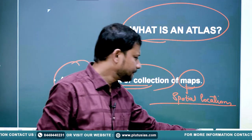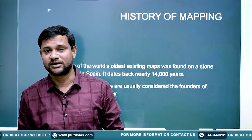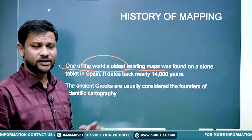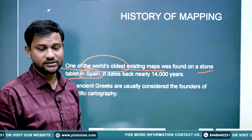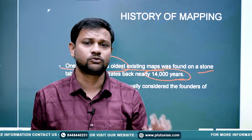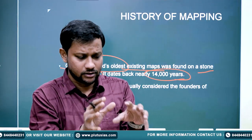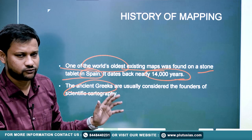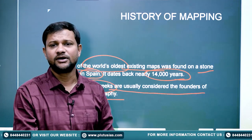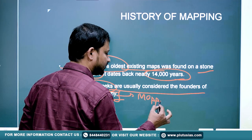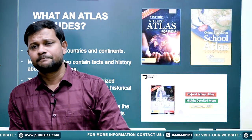Now, a brief about how mapping activity came into being. One of the earliest raw maps had been drawn on a stone tablet in Spain, nearly 14,000 years ago — a very raw map, just representing a local process. Later, the ancient Greeks and Indians as well promoted the formation of cartography. Cartography is simply the branch that deals with mapping — the science of map-making, its study, and all other aspects dealing with it.